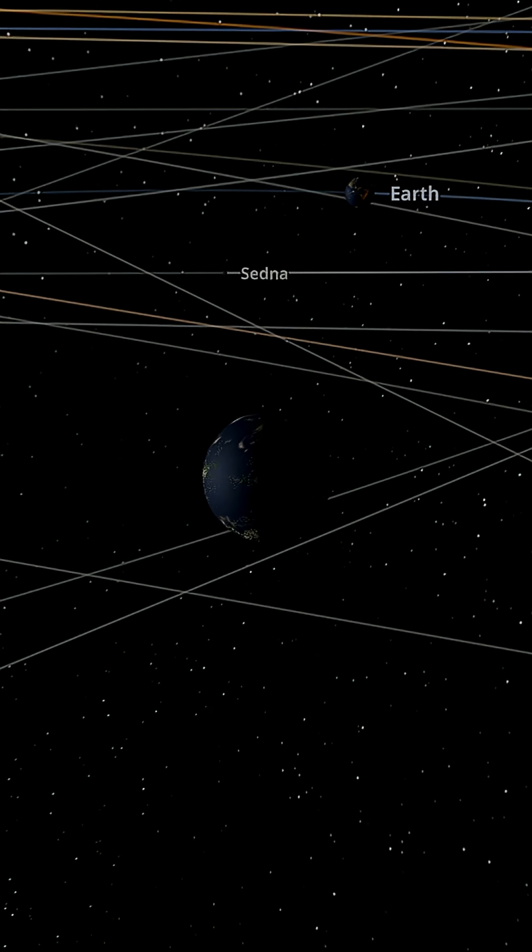Given that since the super-Earth has 10 times the mass of Earth, if you weighed 70 kilograms here, on the super-Earth, you would weigh 700 kilograms.